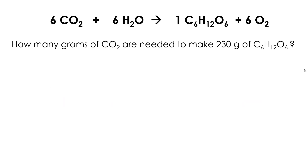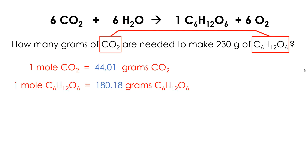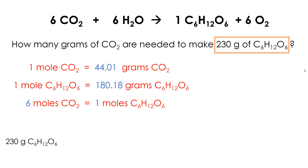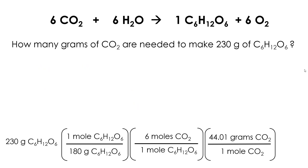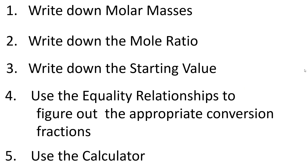Let's summarize what happened. We had a problem. We got the molar mass of one chemical, the molar mass of the target chemical, and the connection between them from the chemical equation — the molar relationship. Once we had all our necessary facts, we started the problem with 230 grams of glucose. We used conversion fractions from equality relationships, matching on the diagonal. Once we had the correct chain of fractions, we put it into the calculator and got the answer: 337.41 grams of carbon dioxide. You write down the molar masses of both chemicals and the mole ratio, then use conversion fractions matching on the diagonal.